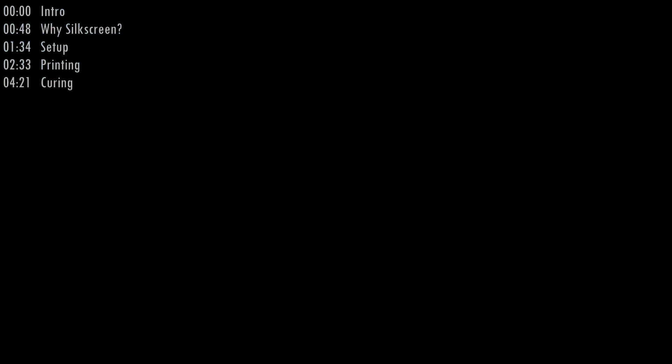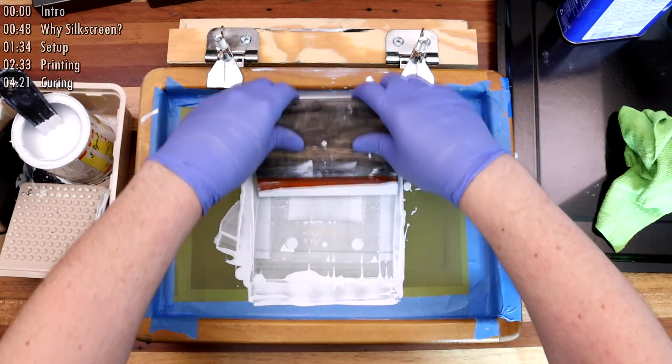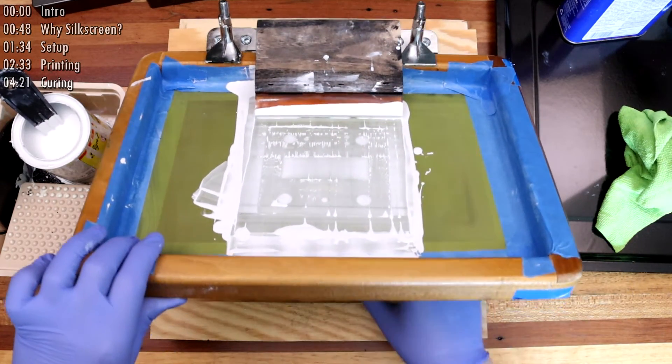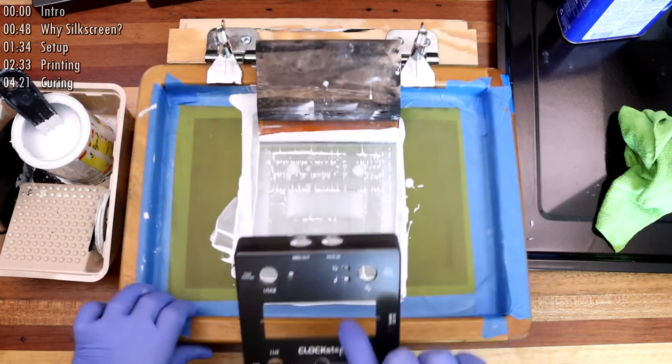The ink is now loaded into the open areas of the screen and is ready for the print. Without putting any additional ink into the area, I press down with the squeegee to make contact with the enclosure below and do an even pressured stroke across the surface.